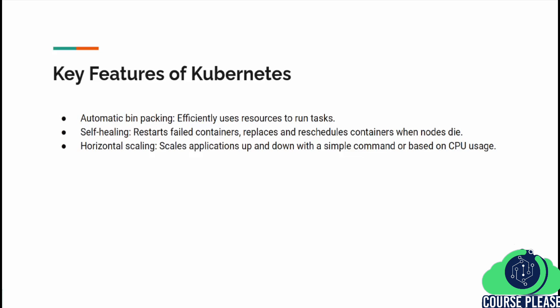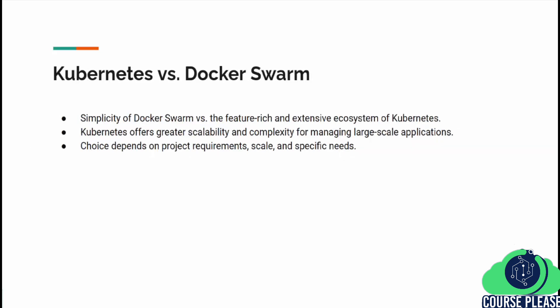These features make Kubernetes a powerful tool for managing applications efficiently and resiliently. While Docker Swarm is known for its simplicity and ease of use, Kubernetes offers a more robust, feature-rich environment ideal for complex, large-scale applications. The choice between Kubernetes and Docker Swarm often comes down to the specific needs of your project and the scale at which you operate.